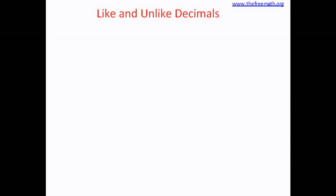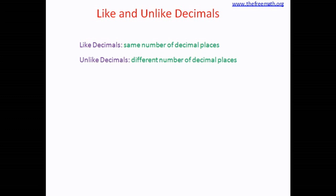Let's see what like decimals and unlike decimals are. Decimal numbers with the same number of decimal places are called like decimals, and decimals with different number of decimal places are called unlike decimals.